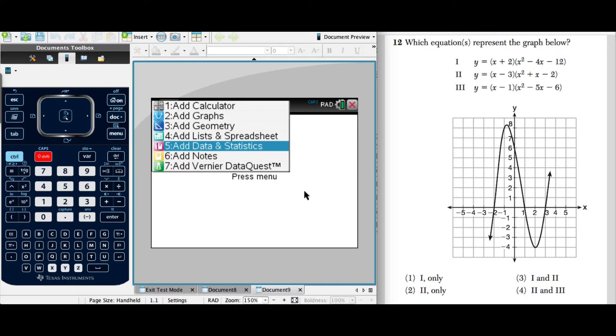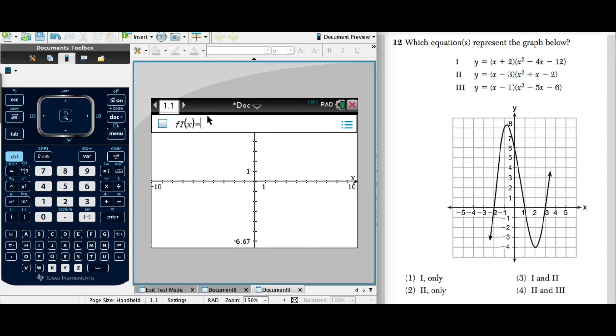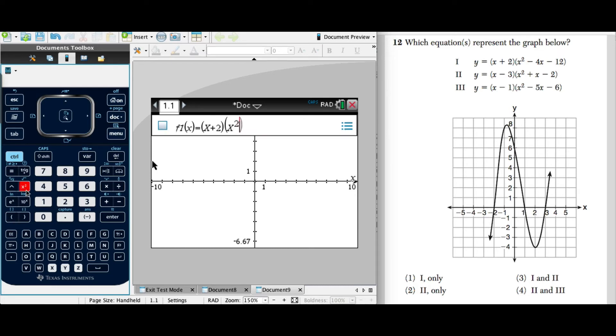So what we're going to do is get to our graphing calculator here. We're going to add graphs. We'll type in the first one. So we take our F1 of X, put in our parentheses, and our X plus 2, close the parentheses, set up another set of parentheses. And we have X squared minus 4X minus 12.